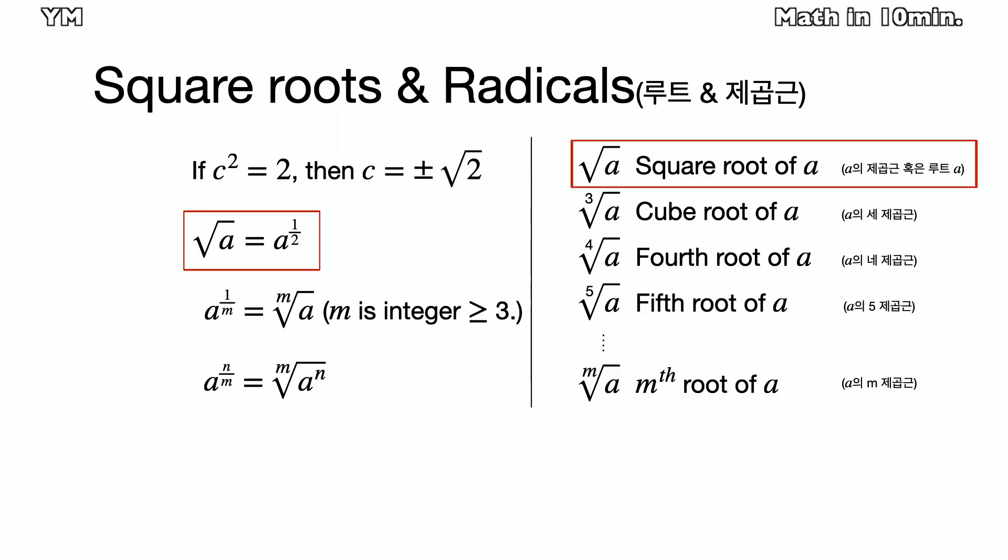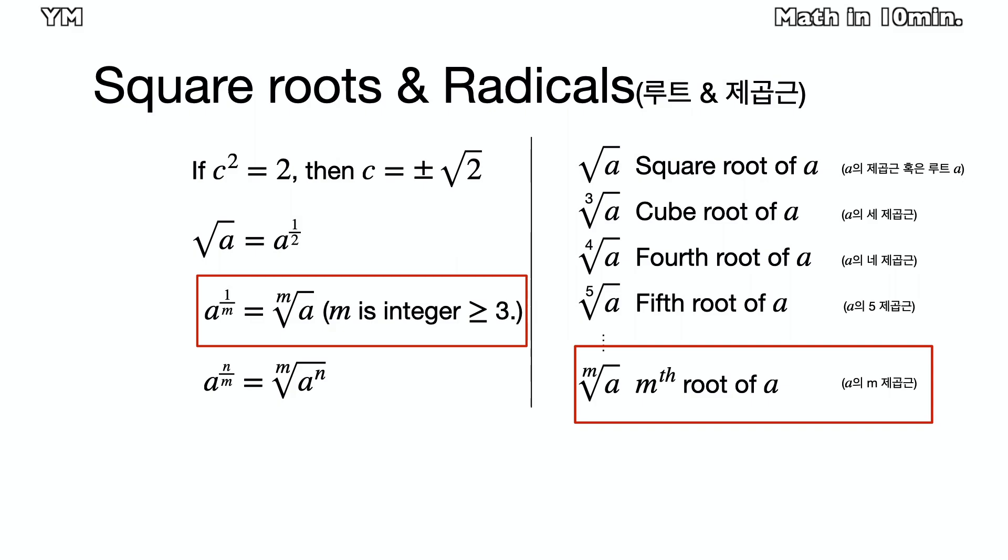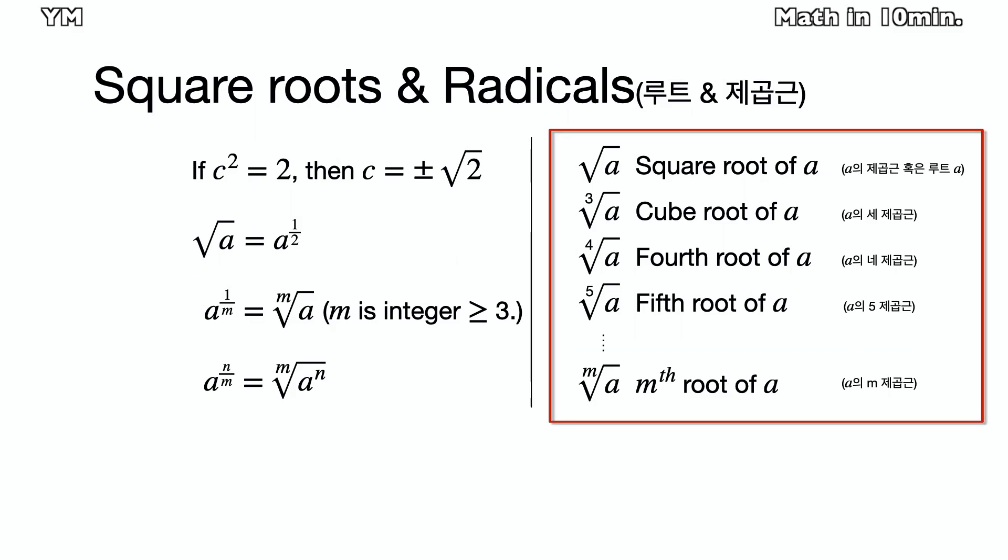Square root of a is equal to a to the power of a half. The power of 1 third is equal to cube root, and the power of 1 fourth is equal to fourth root. When m is an integer greater than or equal to 3, the power of 1 over m is equal to mth root. Check the slide to see how to read these radicals.